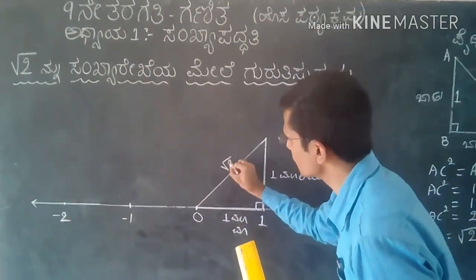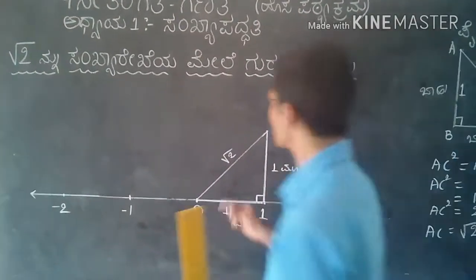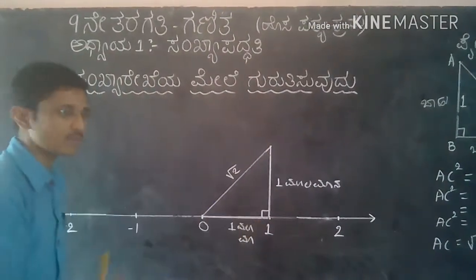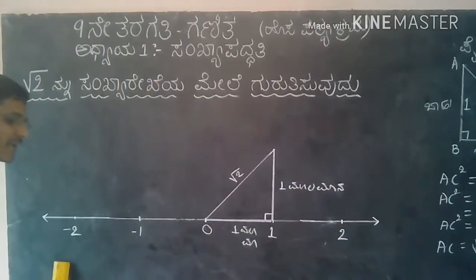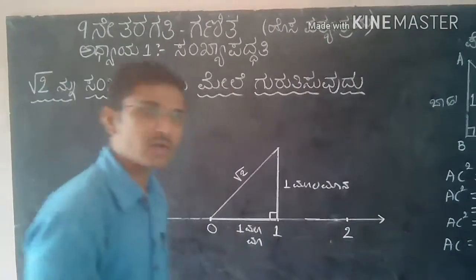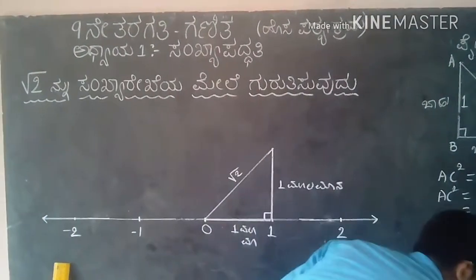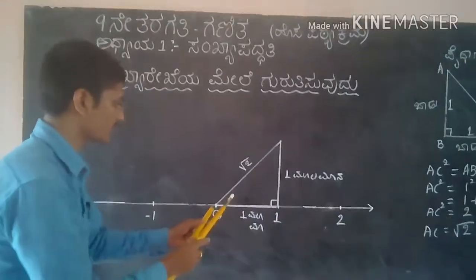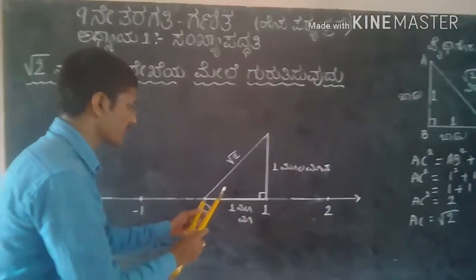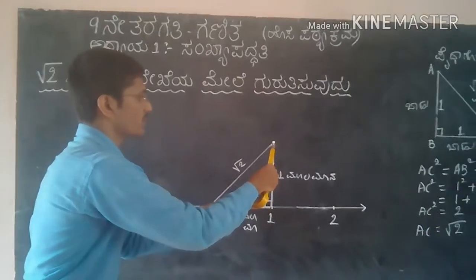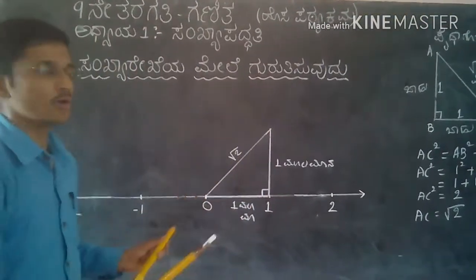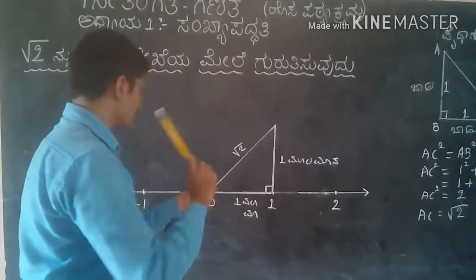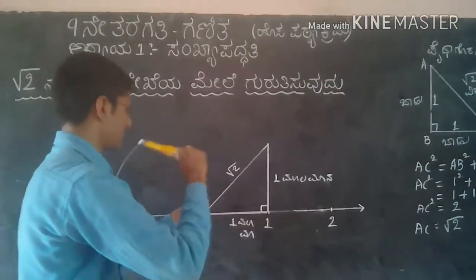In this case, we have to write root 2. We are taking root 2 as we can write. This was a root 2. I am going to write this root 2. As I am using root 2, we have to write root 2. This is root 2.